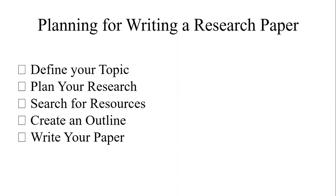These are some contents for planning to write a research paper. The five steps are: number one, define your topic; number two, plan your research; number three, search for resources; number four, create an outline; number five, write your paper — very short and concise.